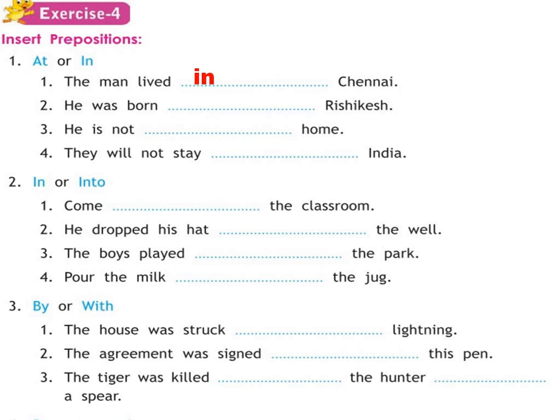He was born dash Rishikesh. Rishikesh is a smaller place, so we will write 'at Rishikesh'. He is not dash Whom — Whom is a smaller place, so 'at Whom'. They will not stay dash India. Now you tell me, India is big or small? Big — so we will write 'in India'.